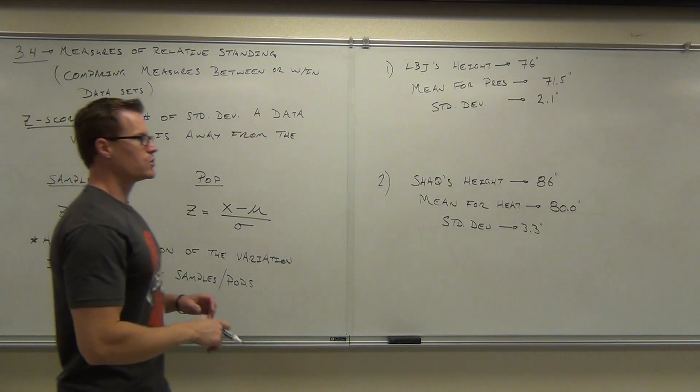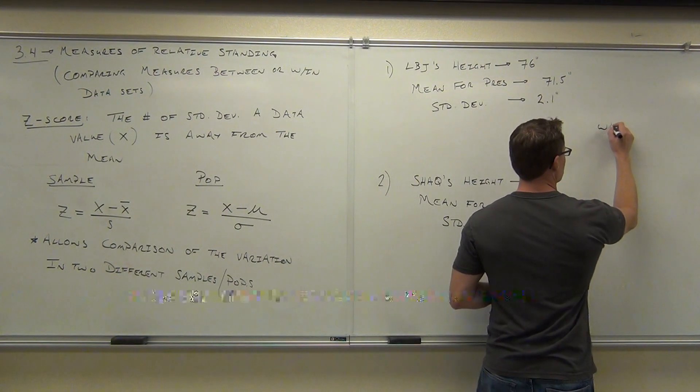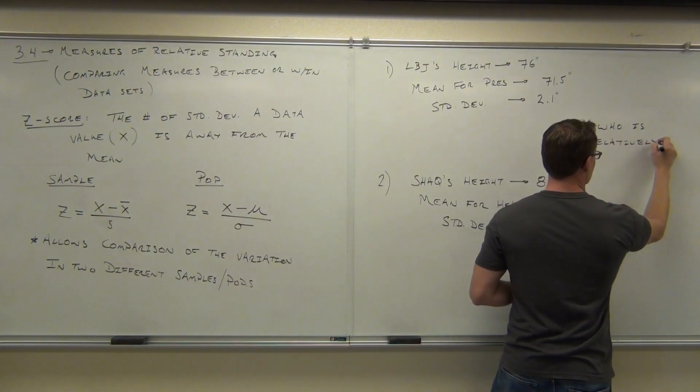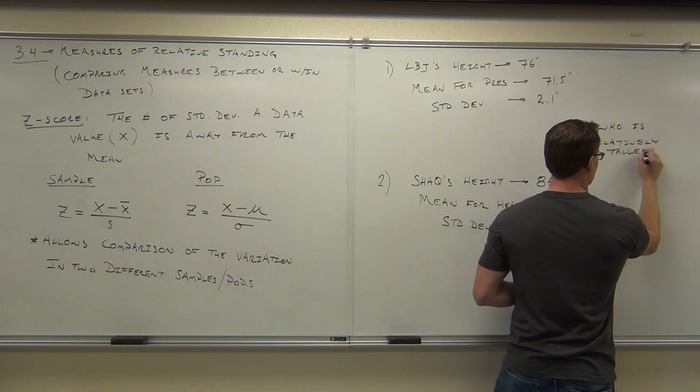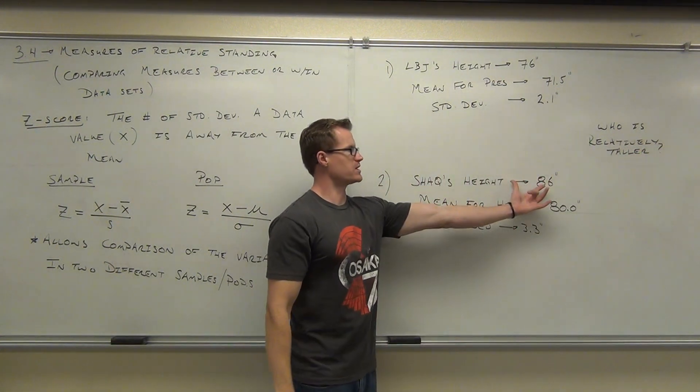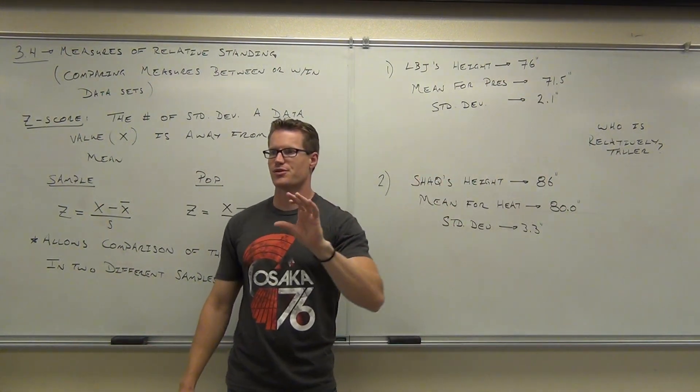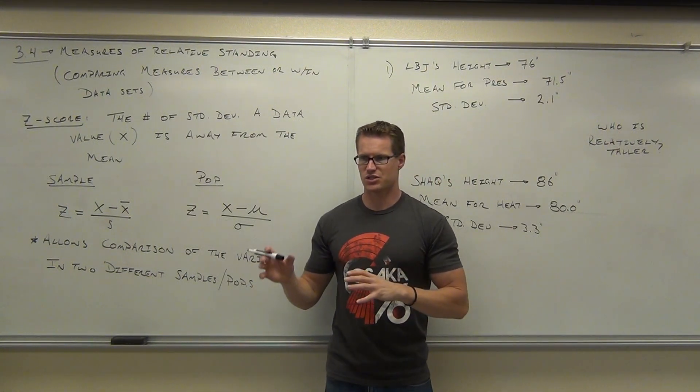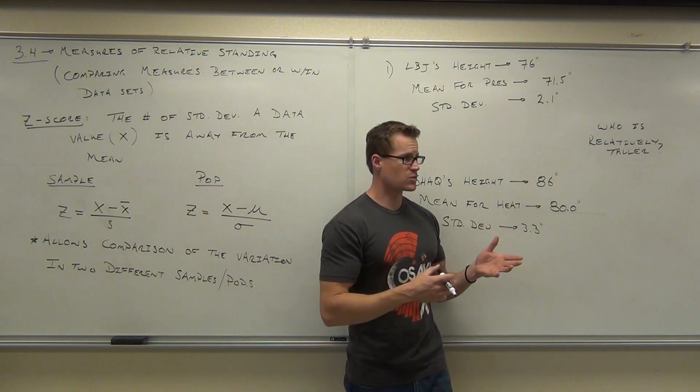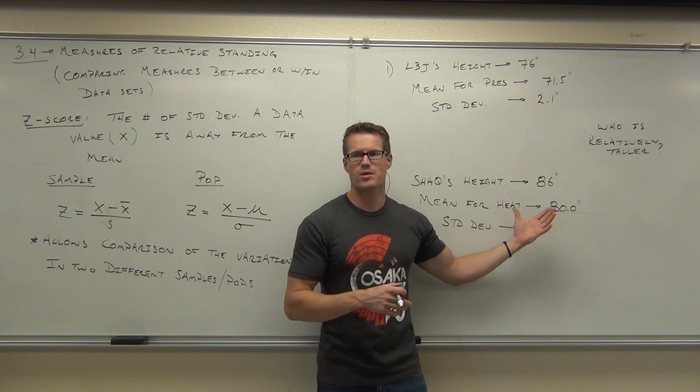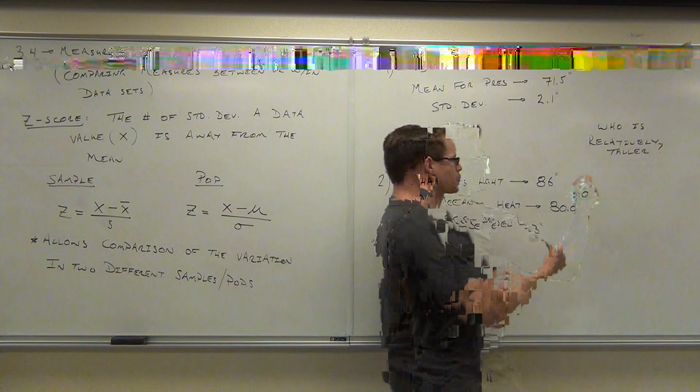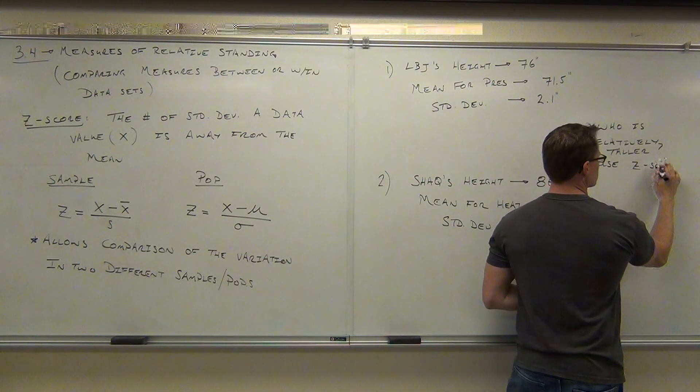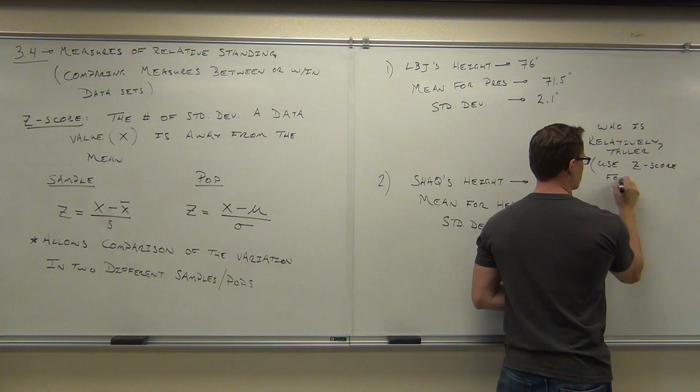The question is, who is relatively taller? Of course, we just answered Shaquille O'Neal is absolutely taller. He's 86 inches compared to 76 inches, for sure. But relatively compared to their own individual populations, who's taller. By the way, I said this earlier, but we're going to be using the z-score for samples of populations here. Because we're considering all the presidents and all the Miami Heat players when he played. That's why we're using populations. So we're going to use a z-score for populations.